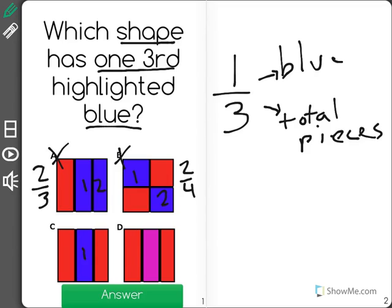C has one blue piece out of three total pieces, and D seems to have no blue pieces at all, so that can't be the correct answer, leaving us with C: one-third highlighted blue.